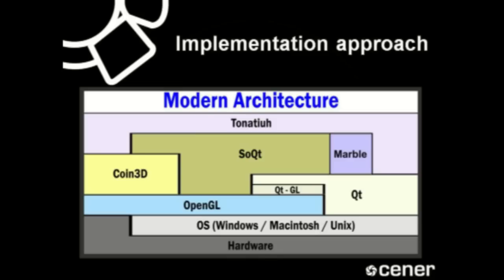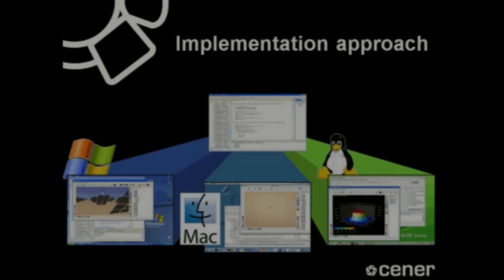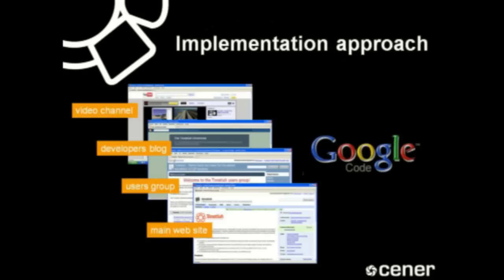The extensive use of well-established open source libraries makes it possible to make Tonatiuh operating system independent. The same Tonatiuh source code compiles under Linux, Windows XP, Windows Vista, Windows 7, and Macintosh OS X. To deploy Tonatiuh as a full-fledged open source project, we have created a series of internet resources, most based on Google's infrastructure. The main project website and user group are hosted at Google Code, the official blog at Google's Blogspot, and the video channel at Google's YouTube.